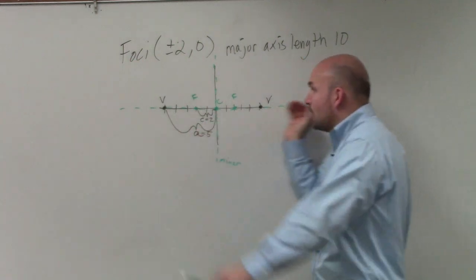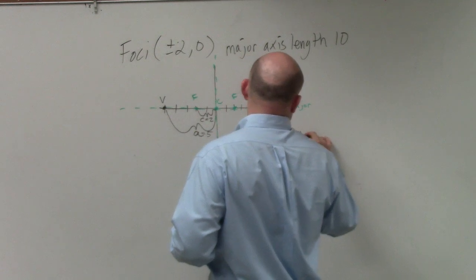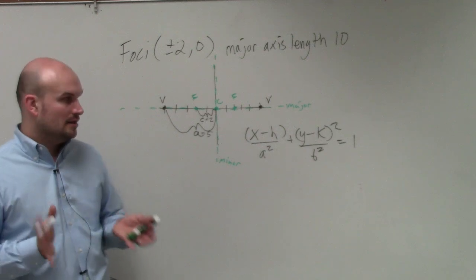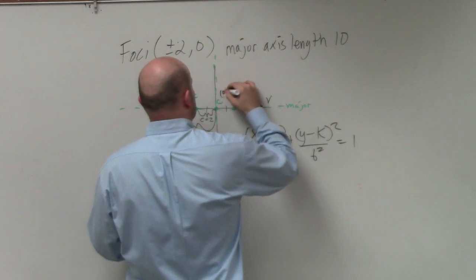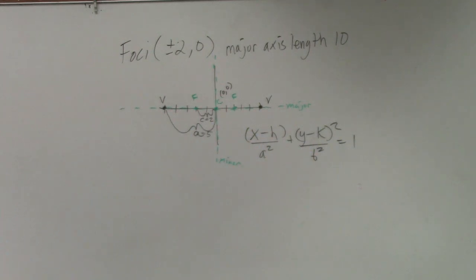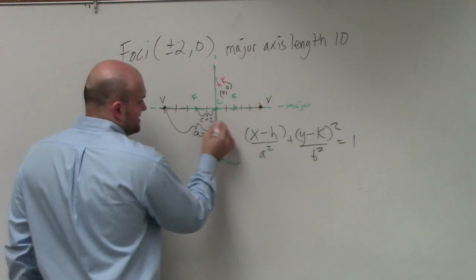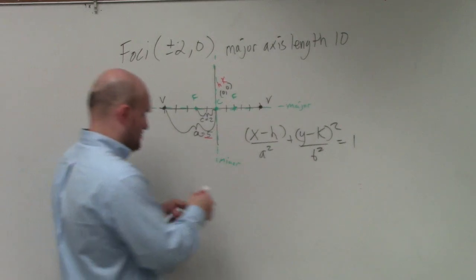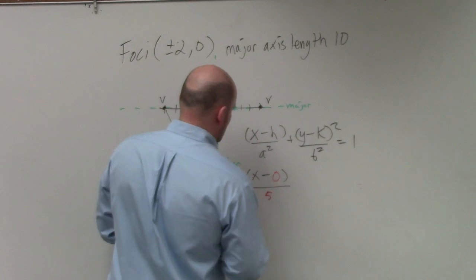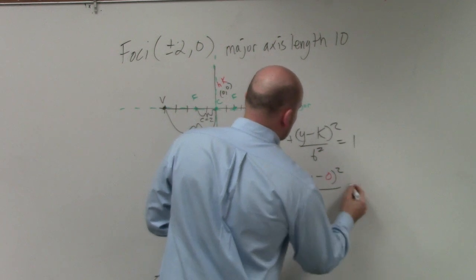So therefore, since my center, my foci, and my vertices all lie on this major axis that's horizontal, I know my equation that I'm going to use is going to look like this. Does everybody agree with me? Yes? OK. So we have our center, which is 0 comma 0. So we know that is going to be, bless you. Bless you.